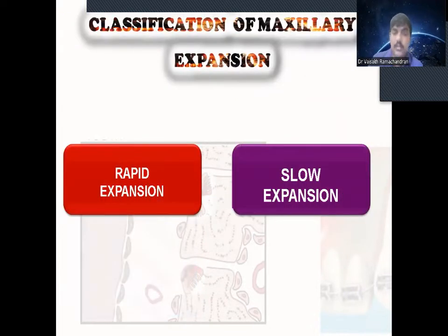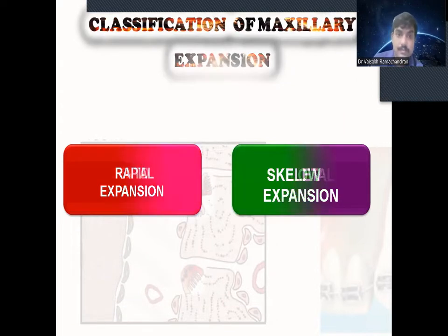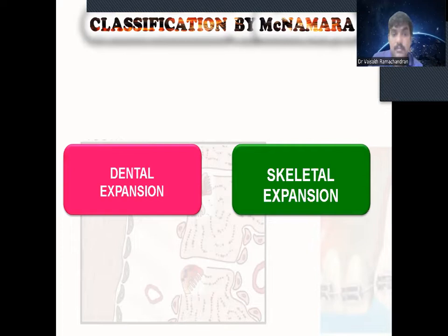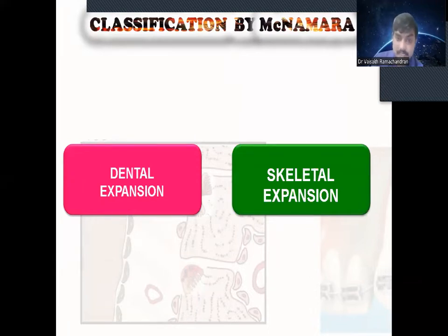We already discussed the classification of maxillary expansion: rapid and slow. McNamara's classification is called dental expansion and skeletal expansion. Mainly the dental expansion is obtained by using slow expansion appliances, and skeletal expansion is obtained from rapid maxillary expansion.